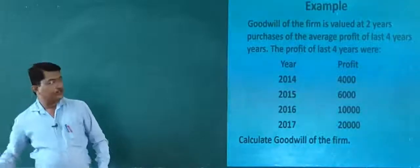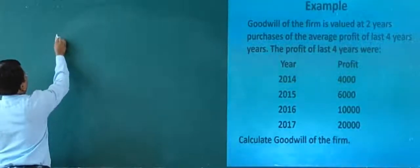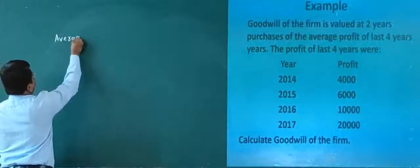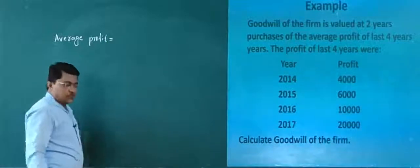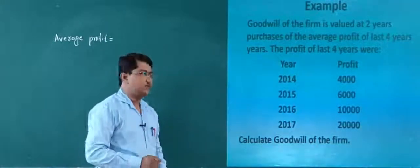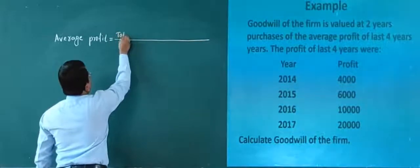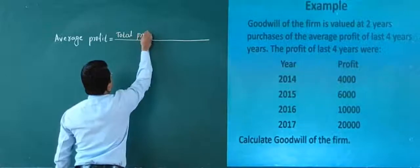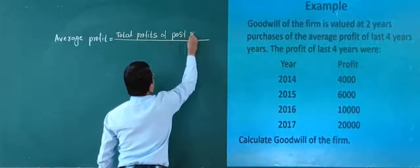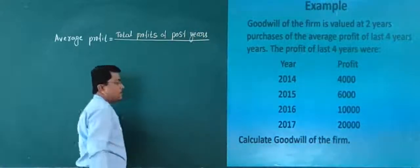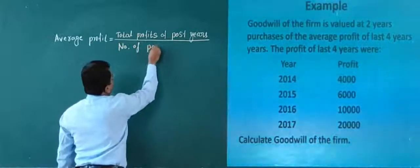Solution: First, we need to calculate the average profit. Can somebody give me the formula for average profit? Yes — average profit equals total profit of past years divided by the number of past years.